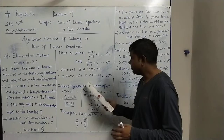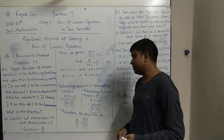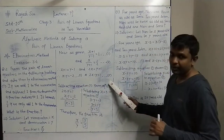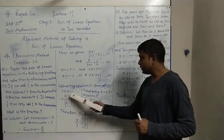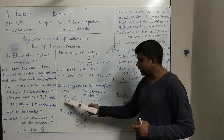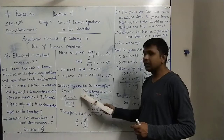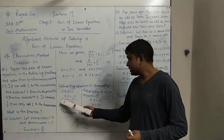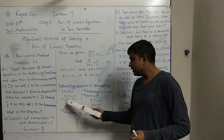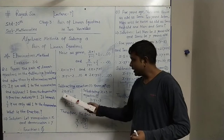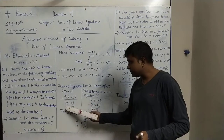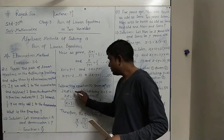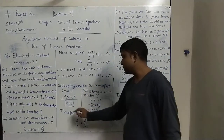Subtracting equation 1 from equation 2: equation 2 is 2x − y = 1, and equation 1 is x − y = −2. Changing the sign of equation 1: minus x becomes plus x, minus y becomes plus y, minus 2 becomes plus 2. So 2x − x = x, minus y plus y cancels, and 1 + 2 = 3. Therefore x = 3.